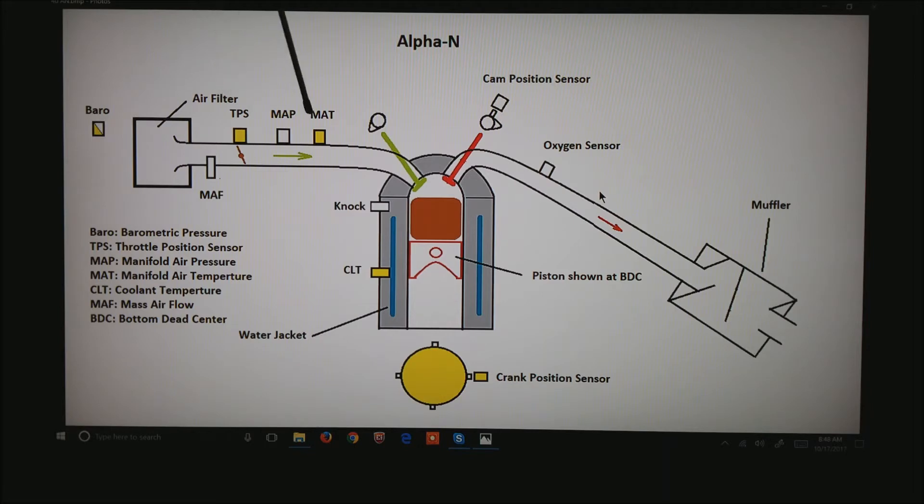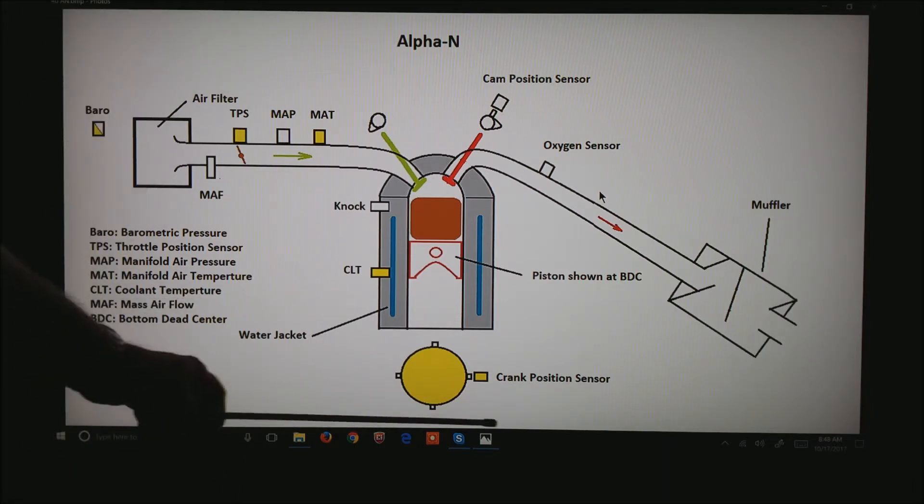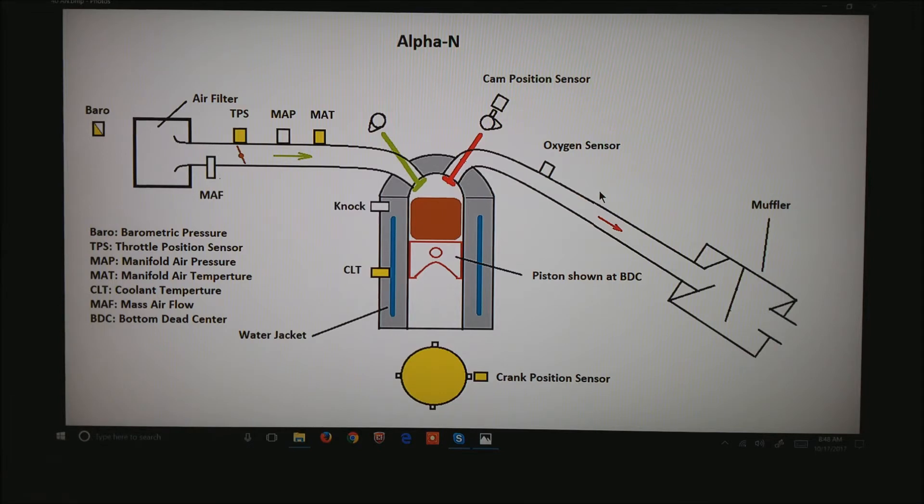We have the TPS, the manifold air temperature, the coolant for warm-up, and the crank position sensor. Sometimes we have in the calculation the barrow or the barometric pressure.